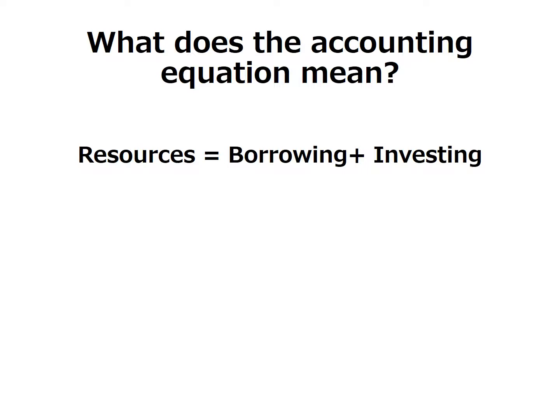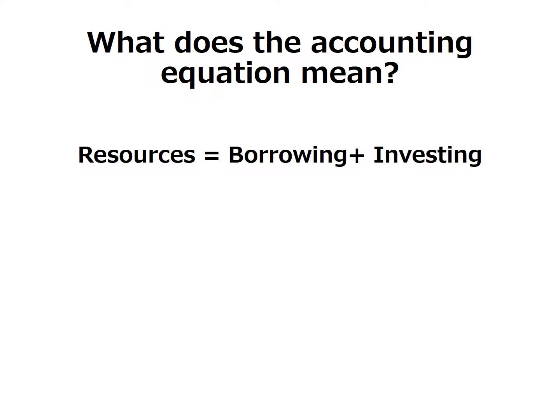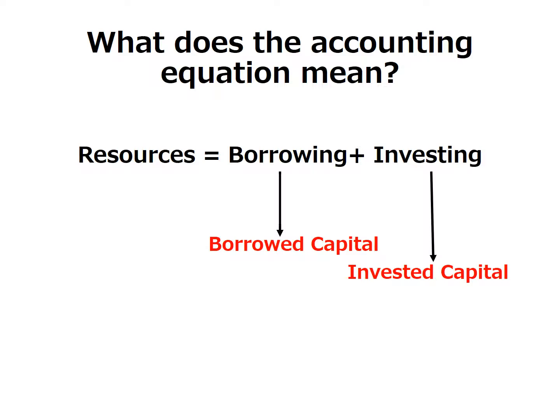One way a business acquires assets is by using debts or by borrowing from a creditor. These liabilities will be paid later. Another way of acquiring assets is through investing, which can be the original investment made by the owner to start the business, or assets produced by operations that are maintained in the business. If the owner did not withdraw them, they are sort of reinvestments. Capital provided through borrowing or credit is called borrowed capital, while capital provided through investment or reinvestment is called invested capital. Assets can therefore be acquired with either borrowed capital or invested capital.